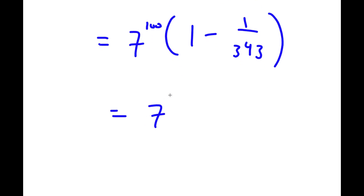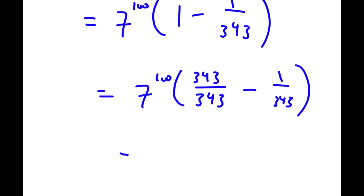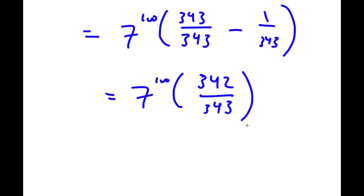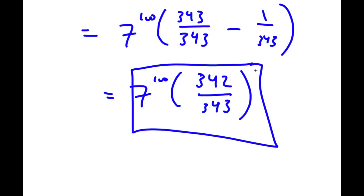I can rewrite 1 as 343 over 343. So now I have 343 over 343 minus 1 over 343, which is simply equal to 342 over 343. So this is my answer: 7 to the power of 100 times 342 over 343.